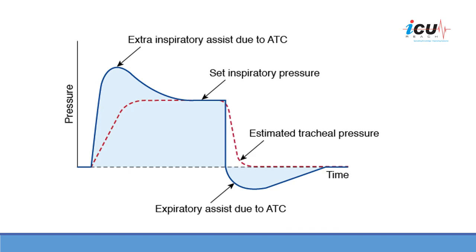ATC applies not only during inspiration but also during expiration. It can deliver a negative value to help the patient exhale. This is the estimated tracheal pressure — the expiratory assist due to ATC is shown on the blue line here, and as you can see, it can drop the pressure to a negative value, facilitating exhalation.